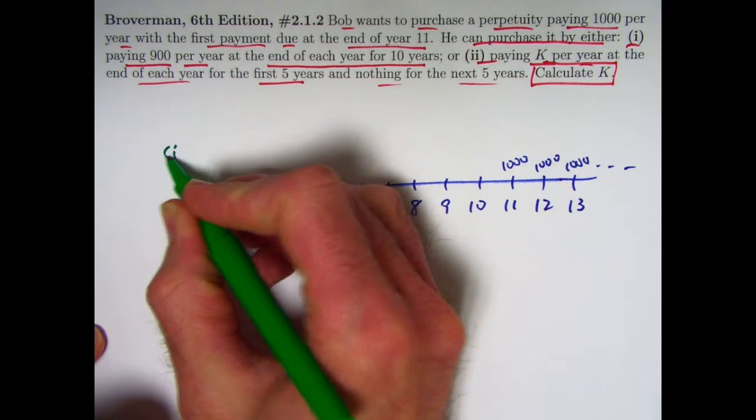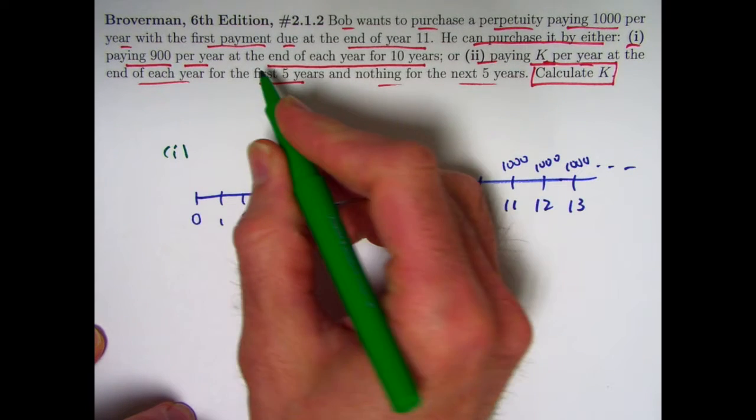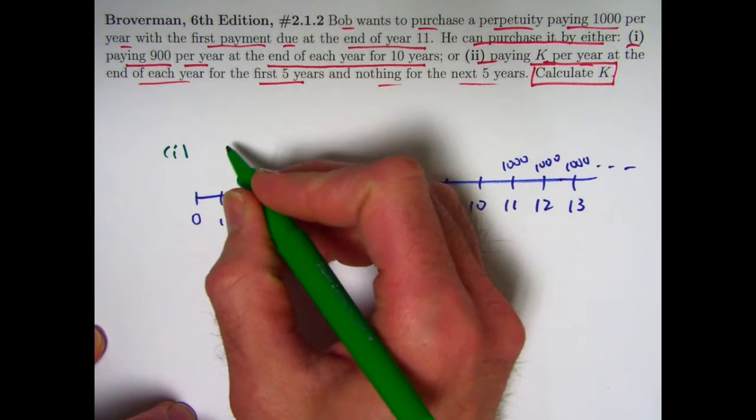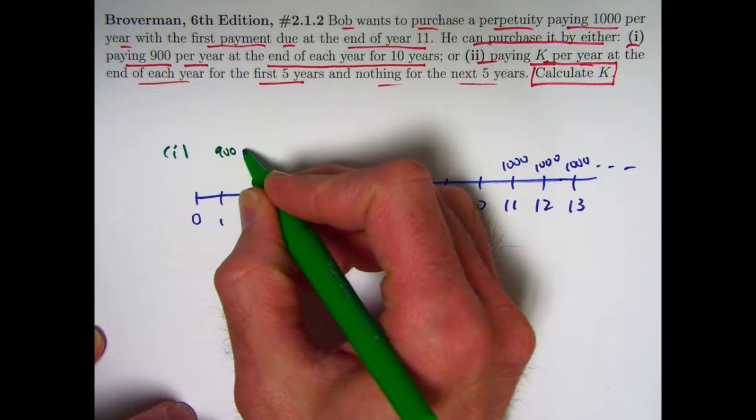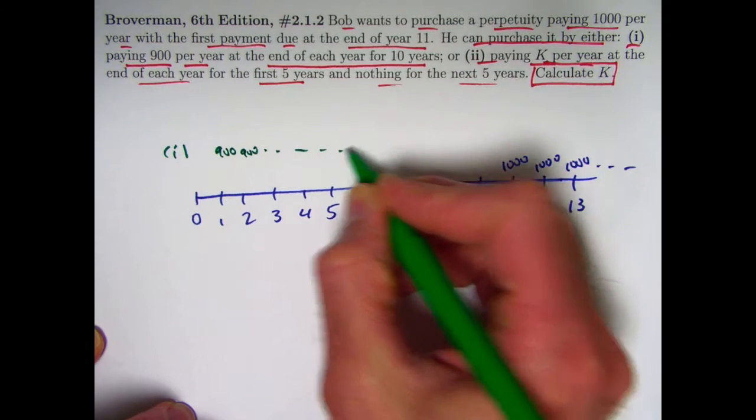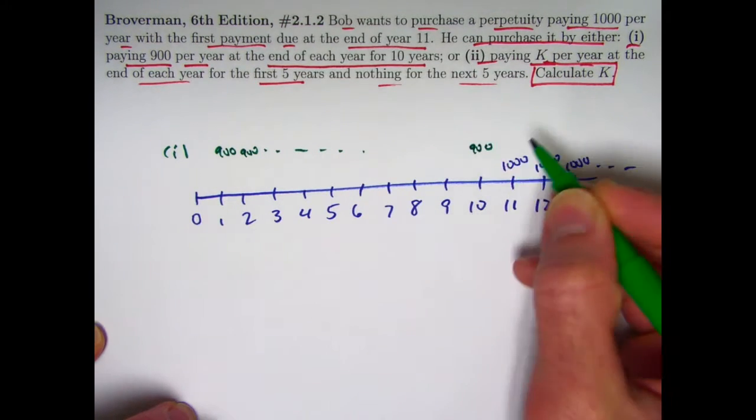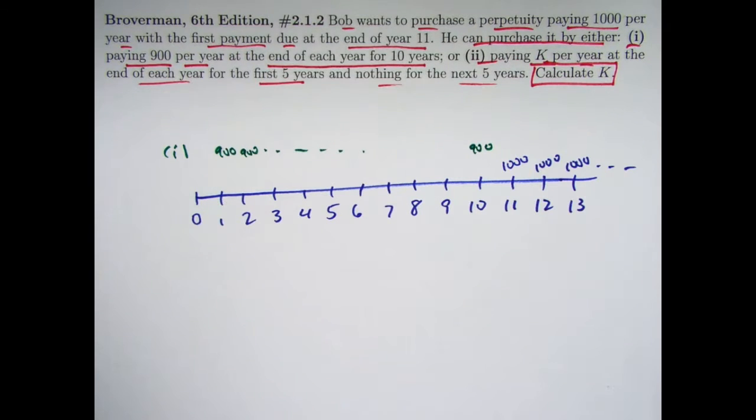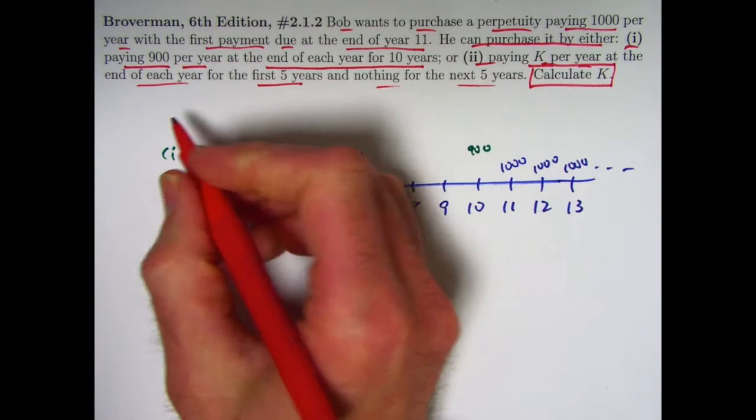Again, there are two ways to pay for it. Option one, pay $900 per year at the end of each year for the first 10 years. $900 here, $900 here, etc. Up to $900 here at time 10.